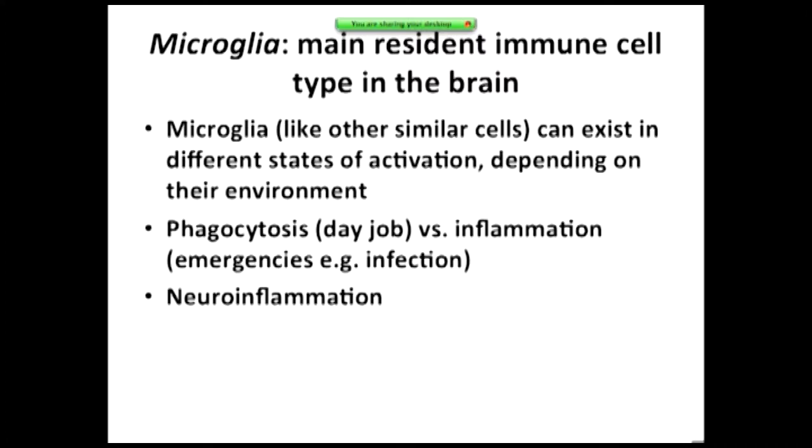Phagocytic is sort of their day job — just cleaning up any damage, very important for learning and memory, which involves tissue remodeling. When activated by certain signals, they switch over to inflammation mode. Phagocytosis just means cell eating — they engulf garbage when in their phagocytic state. In their inflammatory state, rather than taking out the garbage, they spew out reactive oxygen species, pro-inflammatory cytokines, causing functional problems in the brain and impairing memory. We call that neuroinflammation.